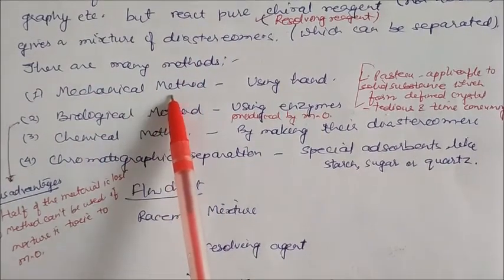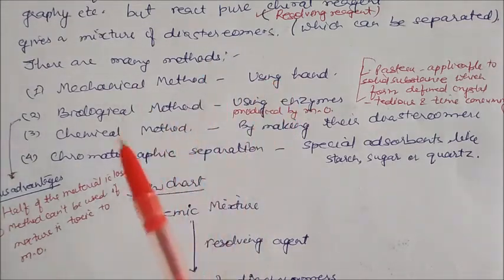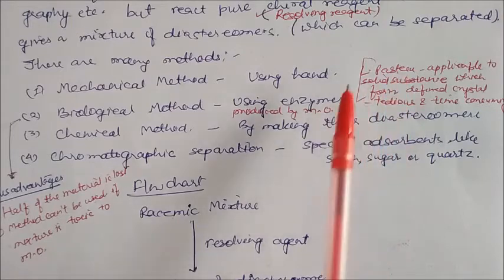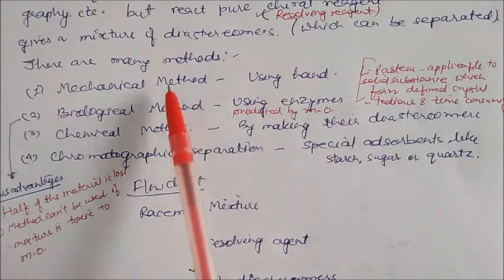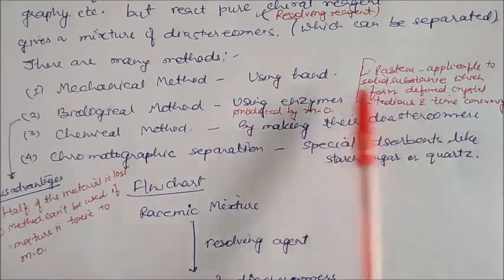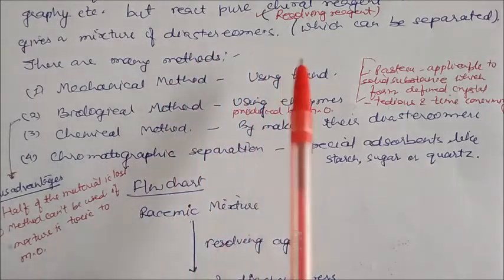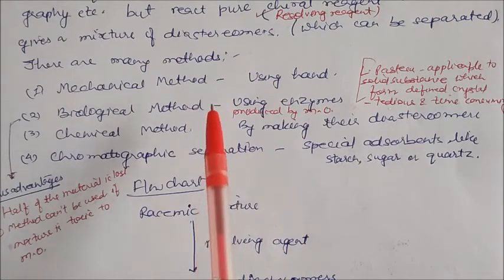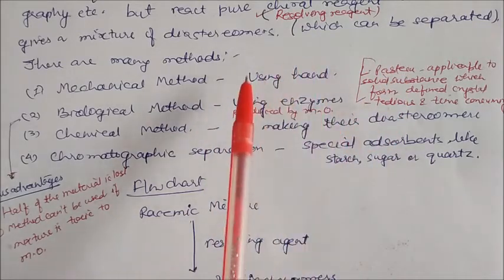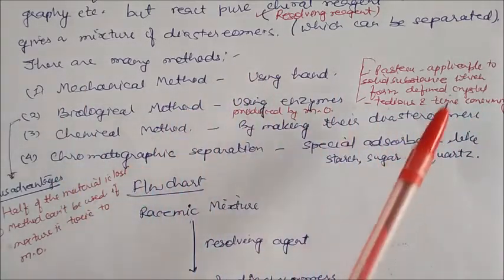There are many methods, or techniques, to separate enantiomers by converting to diastereomers: mechanical method, biological method, chemical method, and chromatographic separation. The mechanical method was first used by Louis Pasteur. This technique was only applicable to solid substances which can form well-defined crystals. His work was very tedious and time-consuming. Using a pair of tweezers, you can separate, for example, tartaric crystals of two types because of their different crystal structures. However, it takes too much time so it is not widely used.